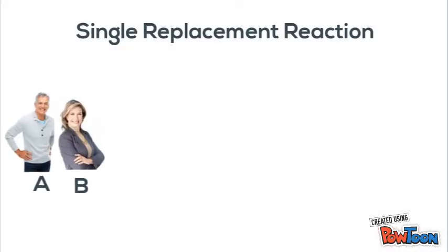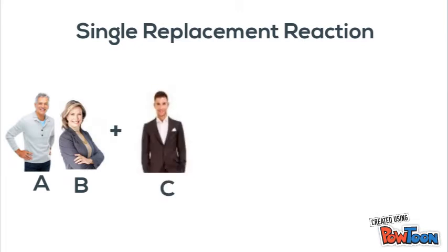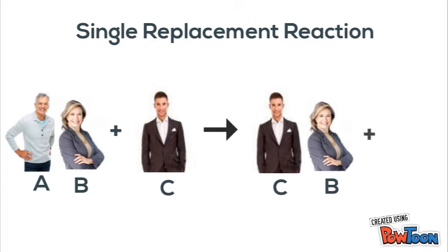So in this example, you have man A and B, and then you have another man. So the men are going to replace each other. You're going to have CB plus the other man is by himself, A.